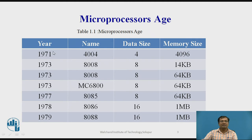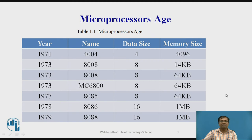Initially, in the year 1971, the 4004 microprocessor was introduced, with a data size of 4 bits and memory size of 4096. Later in 1973, the 8008 was introduced with a data size of 8 bits supporting 14 KB memory. In the same year, two more processors — 8008 and MC6800 — were introduced with 8-bit data and 64 KB memory. Then in 1977, the 8085 microprocessor was introduced, with an 8-bit data bus supporting 64 KB of memory.